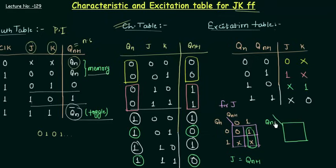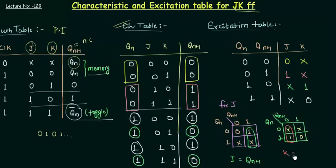Now we make the K-map for K with variables Qn and Qn+1. Filling in the K values: don't care, don't care, 1, 0. Again a very simple K-map. Making the group, the value of K is equal to Qn+1 complement, because Qn is changing from 0 to 1 and Qn+1 is 0. So K = Qn+1 complement. These are the values derived from the excitation table.